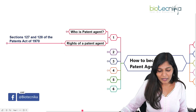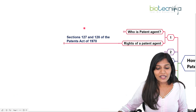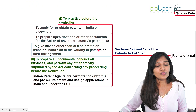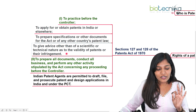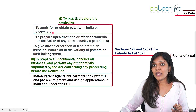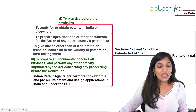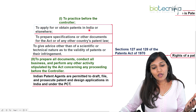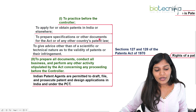Since this is a government job, under sections 127 and 128 of the Patent Act of 1970, the patent agent has to perform certain functions. The first important right is to practice before the controller, and the second is to apply for or obtain patents in India or elsewhere — working for clients either in India or anywhere else in the world.